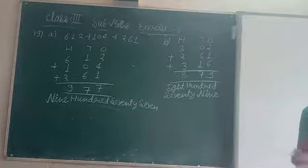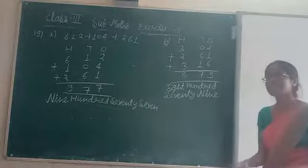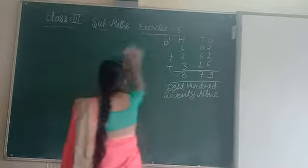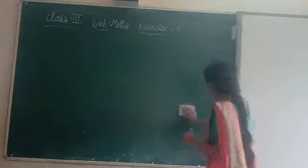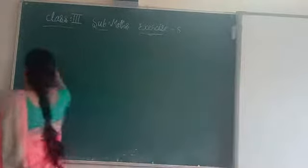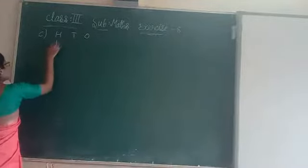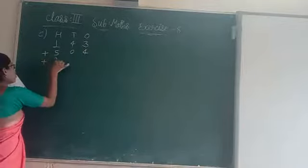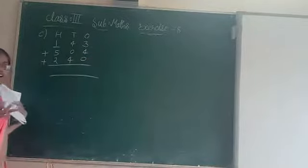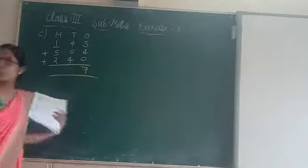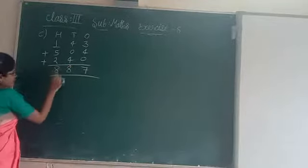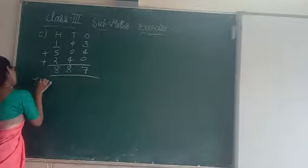You have to pause the video and do this. Now I'm going to do question number C and D. For question C: 1, 4, 3, 5, 0, 4 plus 2, 4, 0. Let's add: 3 plus 4 — 4, 5, 6, 7. 4 plus 4 — 5, 6, 7, 8. 1 plus 5 is 6. And 6 plus 2 — 7 and 8. The answer in hundreds format is 8, 8, 7 — that is 887.